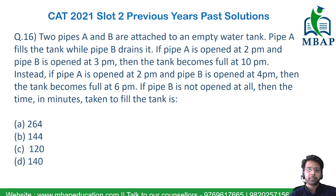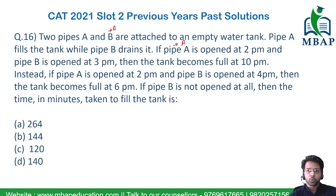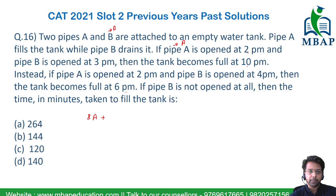Let's understand the time each pipe is open. Assume A fills A units per hour and B fills P units per hour. From 2pm to 10pm, pipe A was opened for 8 hours, so the work done is 8A. B is opened at 3pm, so from 3 to 10 is 7 hours — B was open for 7 hours. Working together, positively or negatively, they fill the tank.